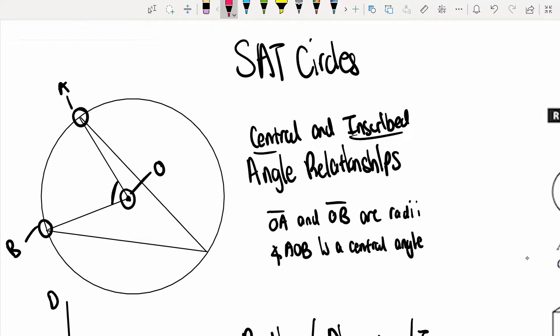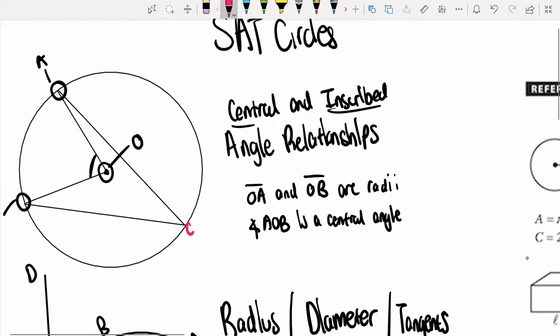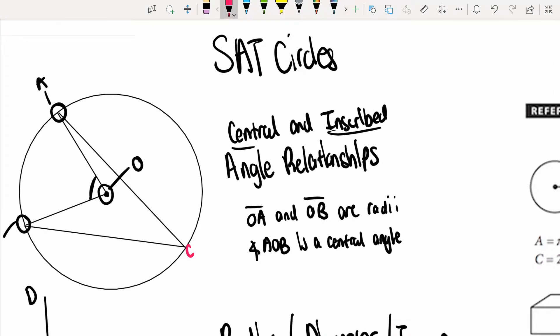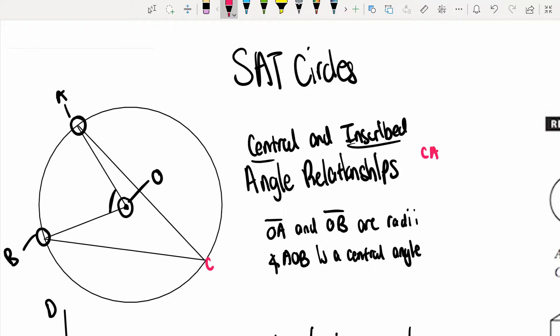Inscribed angles are going to be somewhat similar to central angles. In this case, what we have here is a point C that extends throughout the entire circle. It doesn't touch the center. In this case, CA and CB are chords. Angle ACB is an inscribed angle. Here's the definition: Inscribed angles are formed by two chords of a circle, and the inscribed angle is going to be the gap between them.